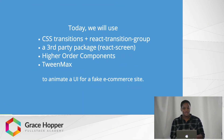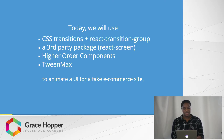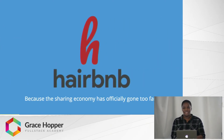So today, we're going to use CSS Transitions and React Transition Group, a third-party package called React Screen, higher order components, and the animation library TweenMax to animate a UI for a fake e-commerce site with a very silly name and an even sillier concept called Hair BnB.